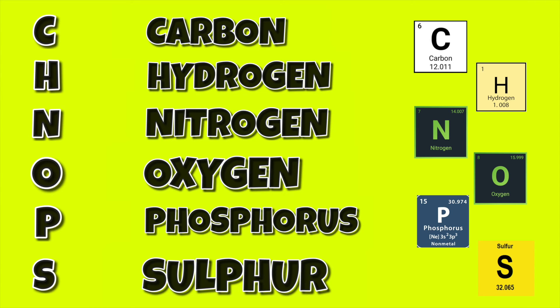This mnemonic is labeled from the most abundant, which is Carbon, to the least abundant, which is Sulfur.